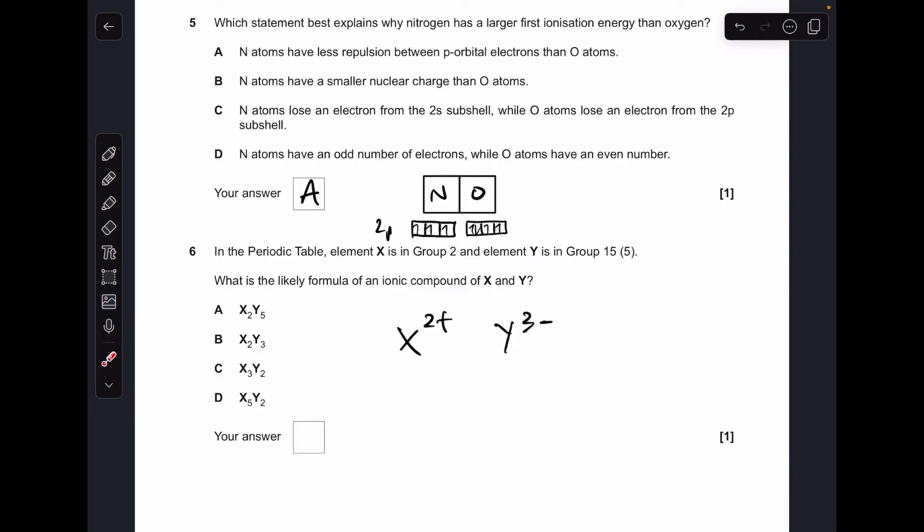Moving on to number 6. So if X is in group 2, it forms a 2 plus ion. If Y is in group 5, it's going to form a 3 minus ion. So the ionic compound is going to be X3Y2. And so that was option C.